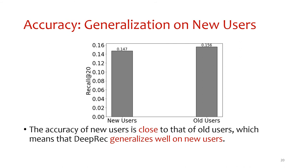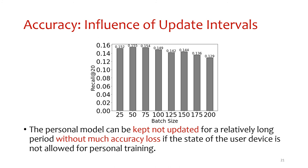To measure DeepBReath's generalization on new users, we compare accuracy of old and new users. Surprisingly, although new users' interaction behaviors are not uploaded or used for global training, accuracy for new users is close to that of old users. Personal training need not be performed every time new interactions appear, since devices are not always idle. We find that within a relatively wide range, the update interval for training personal modules hardly influences accuracy.